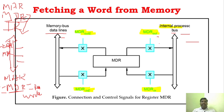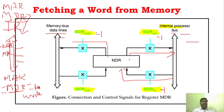Whenever MDRout is equal to 1, the data from the MDR will be sent to the internal bus. Whenever MDRin is equal to 1, the data from the internal bus is sent to the MDR. Similarly, whenever MDRoutE is equal to 1 — that is enabled — the data from MDR is sent to the external bus. When MDRinE is equal to 1, from the external bus it sends data to the MDR.